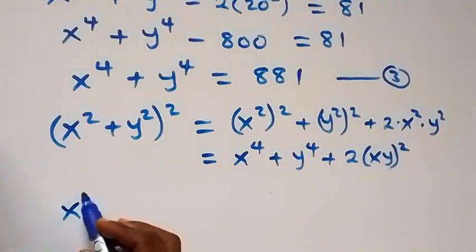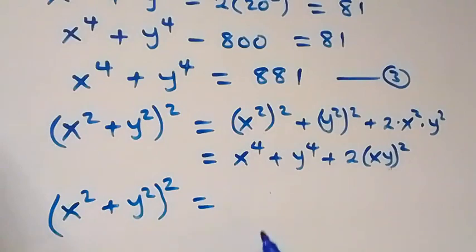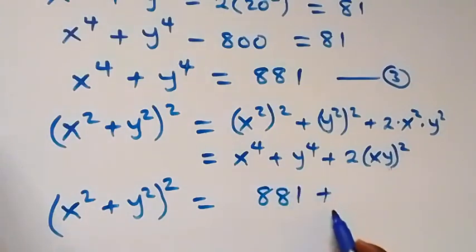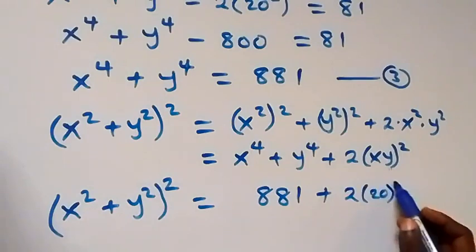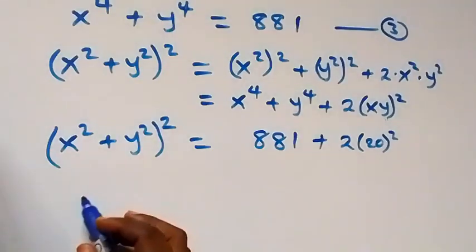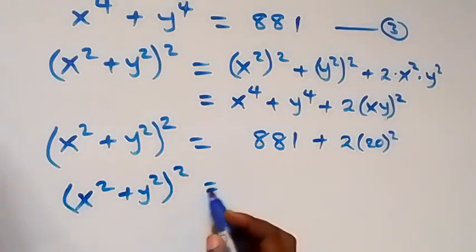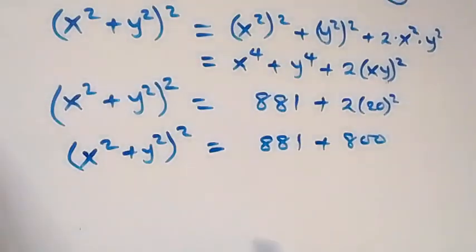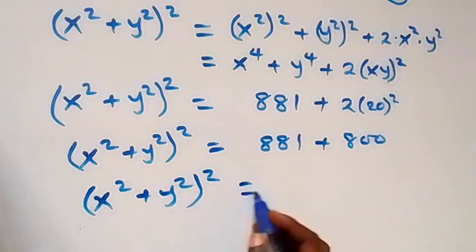So x squared plus y squared, all squared, equals x to the power 4 plus y to the power 4, which from equation 3 is 881, plus 2 times xy squared. Since xy equals 20 from equation 2, we have 881 plus 2 times 20 squared, which is 881 plus 800.